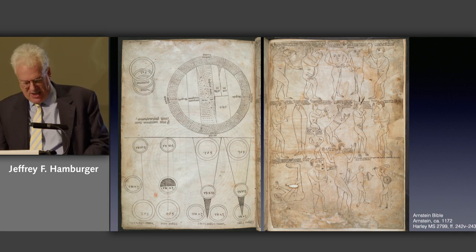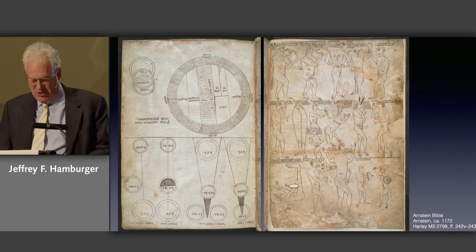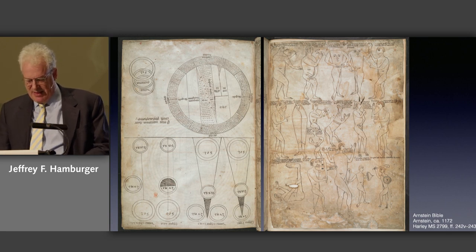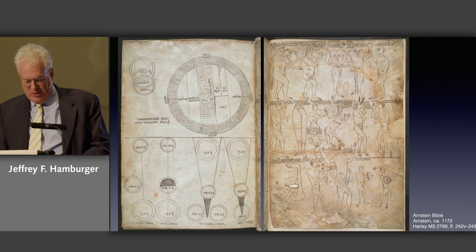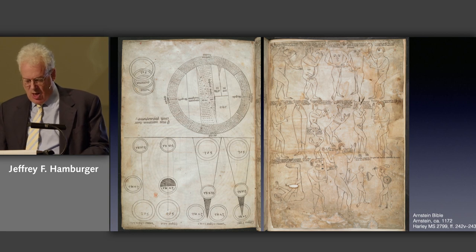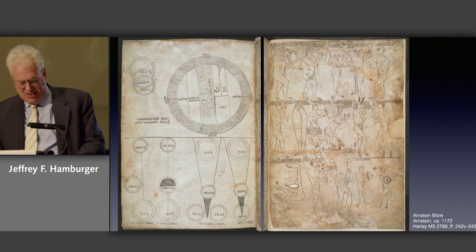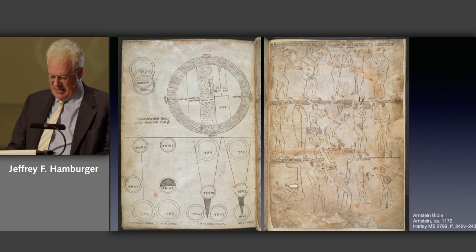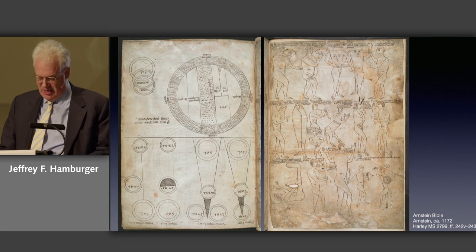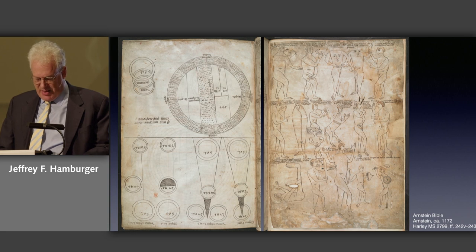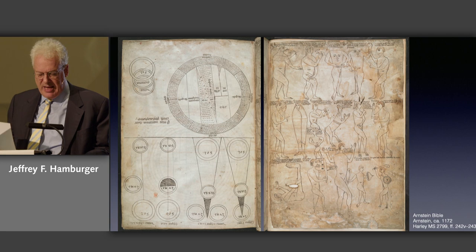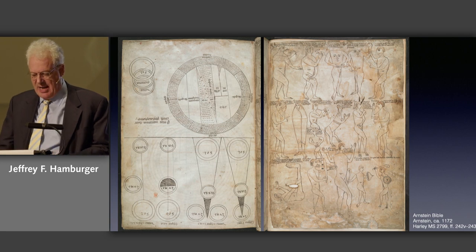The facing page presents the monstrous races described by Pliny, thought to inhabit the farthest reaches of the earth. In keeping with scriptural exegesis of the 12th century, which placed ever greater emphasis on the literal sense and with it the importance of God's creation as an ordered image of the divine, the diagrams convert the Bible into a school book for a curriculum that comprehends history, nature, and the liturgy.